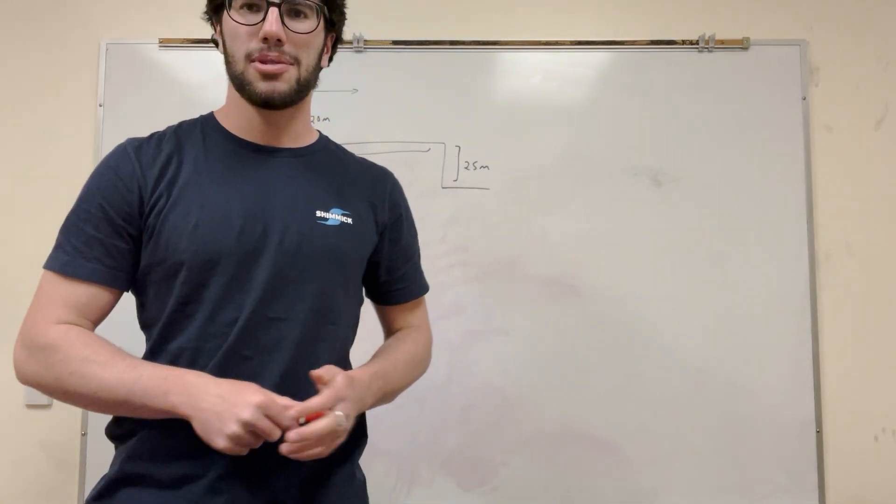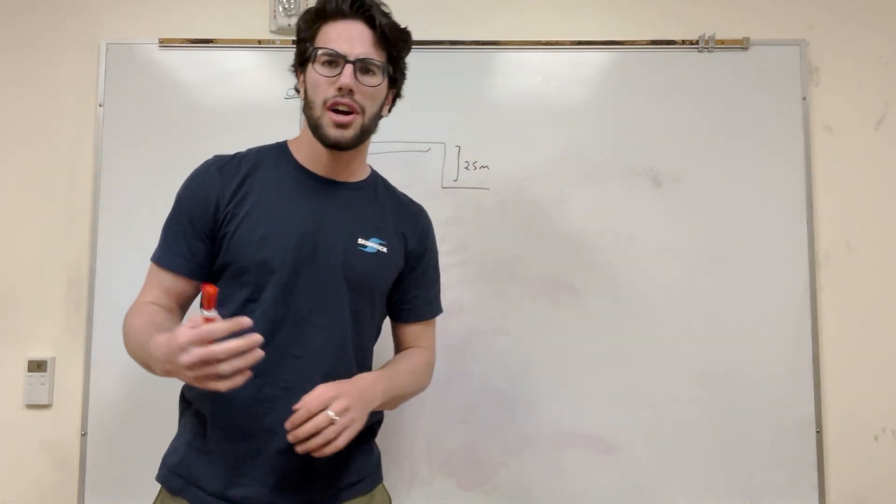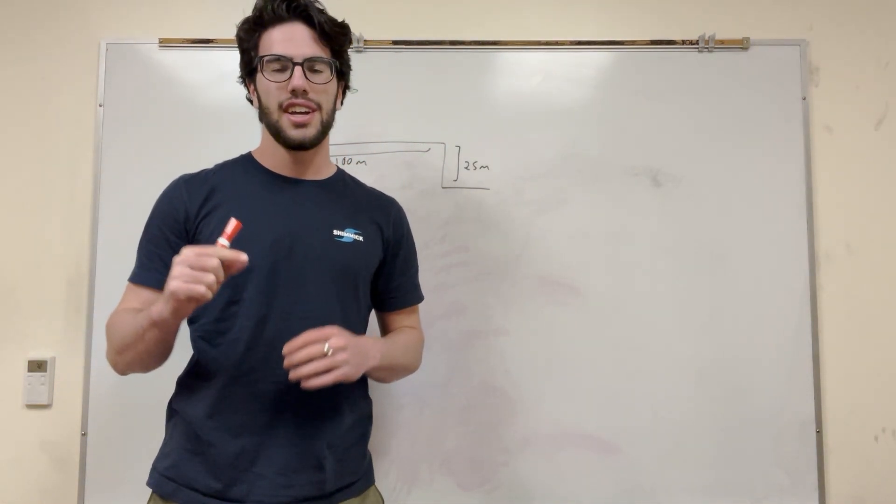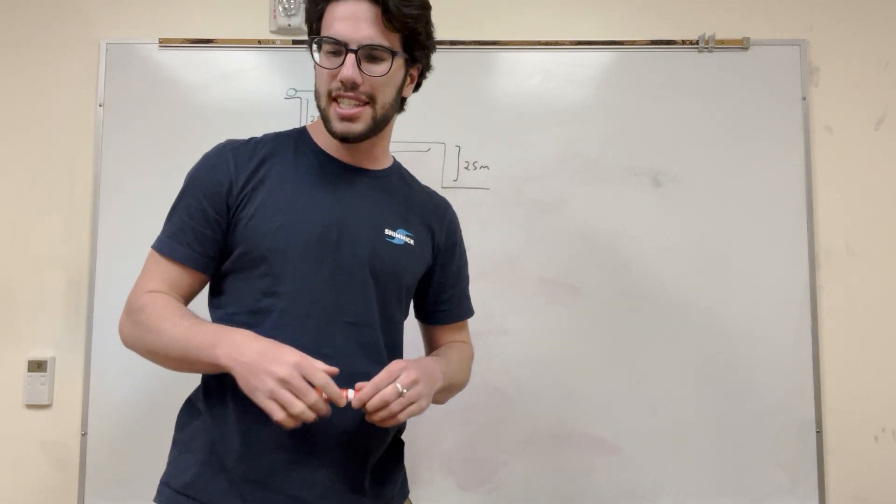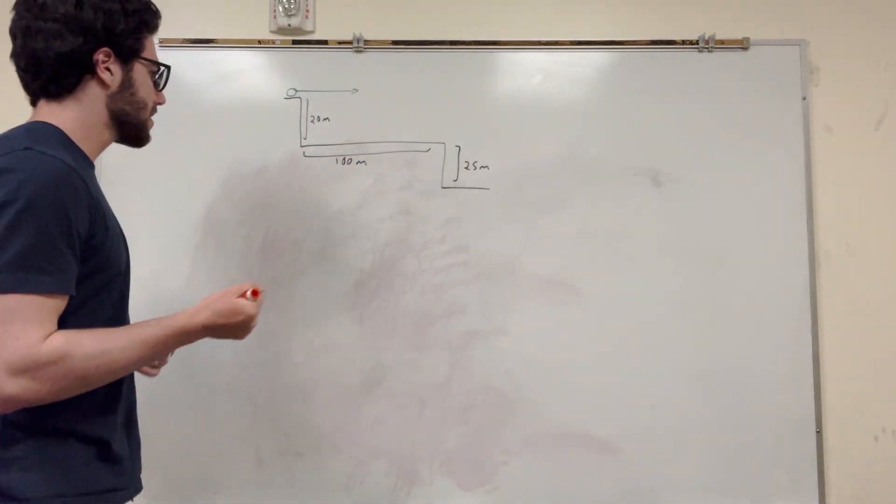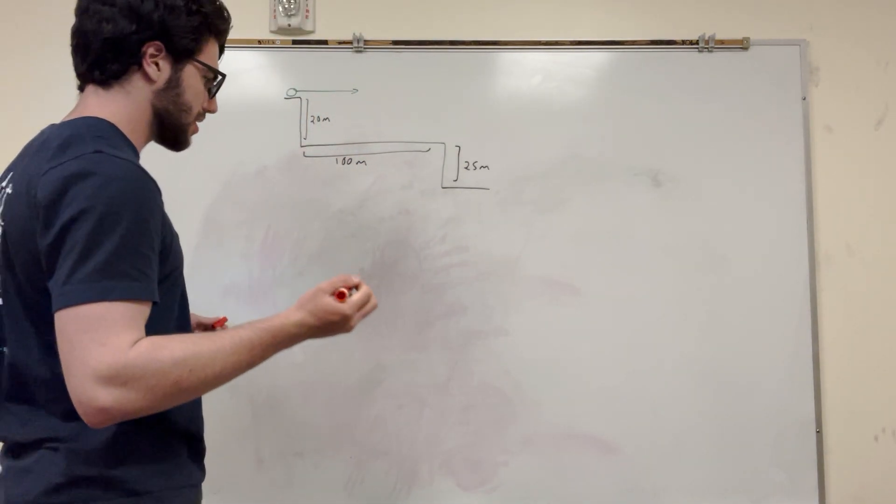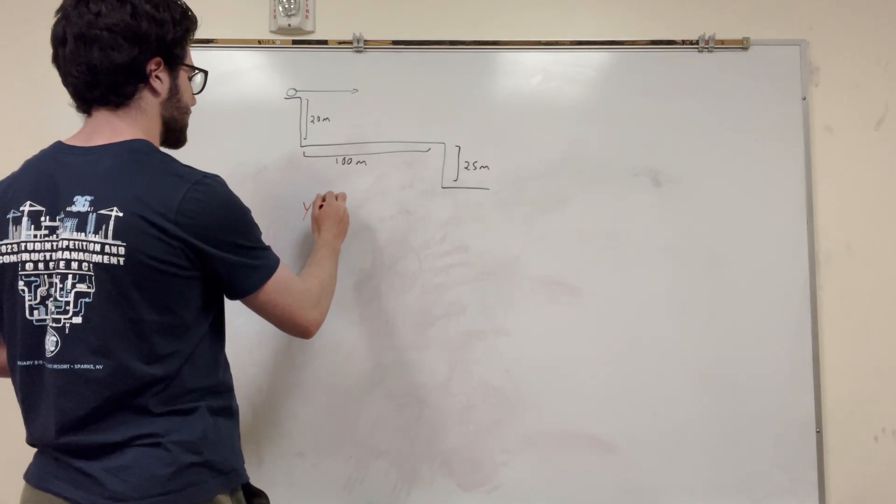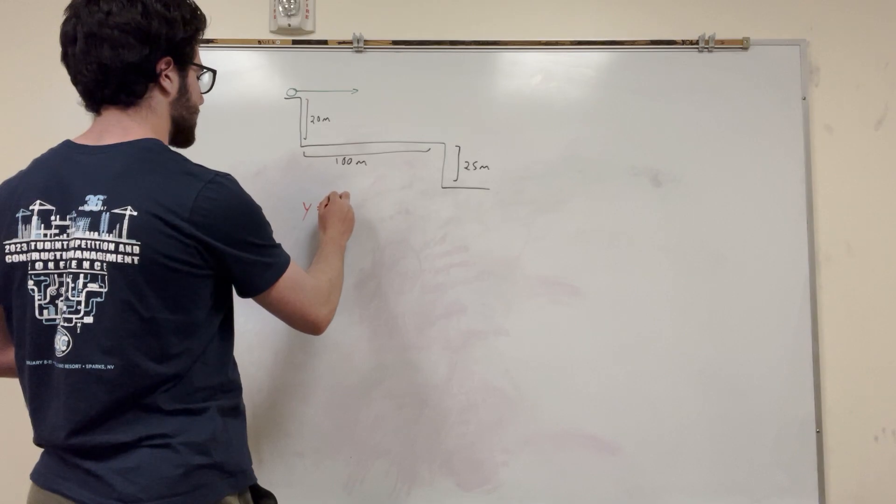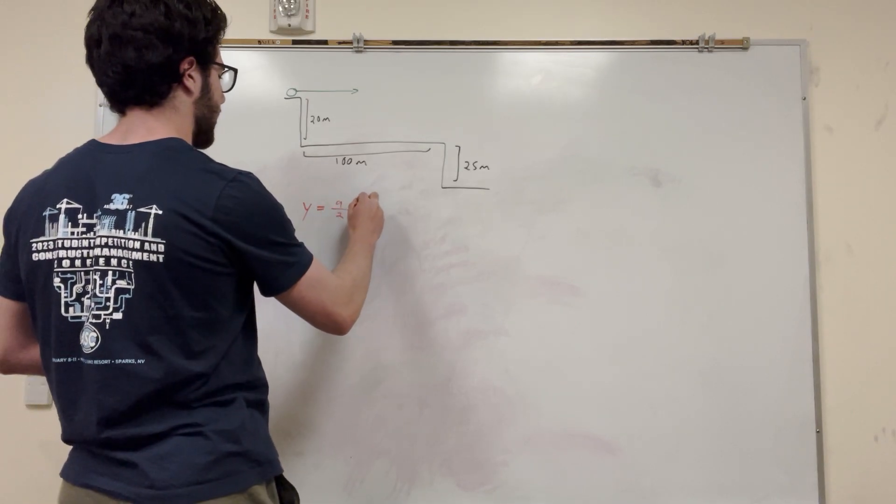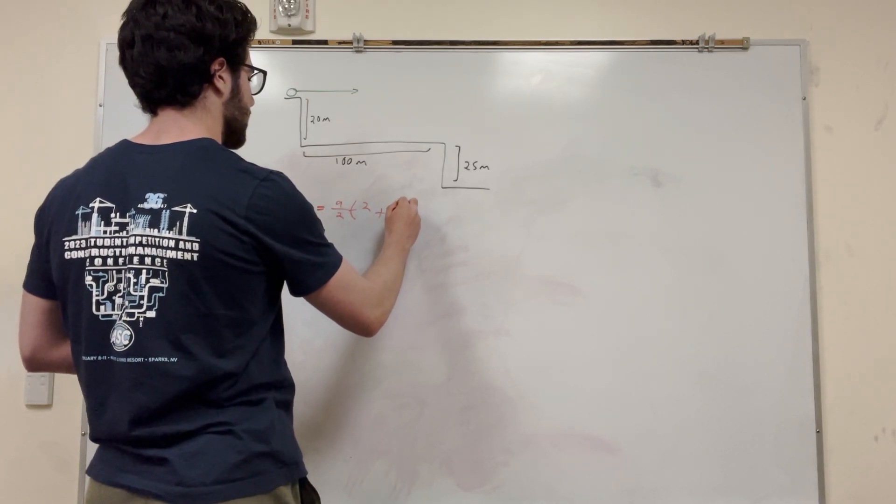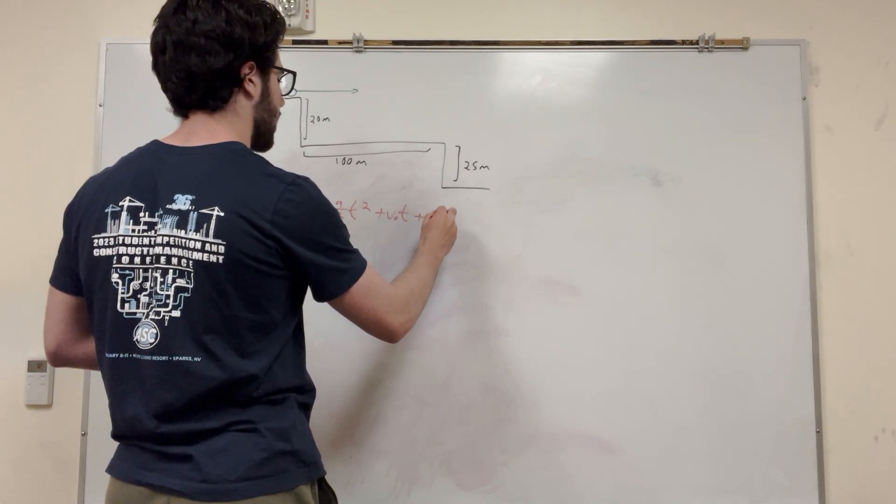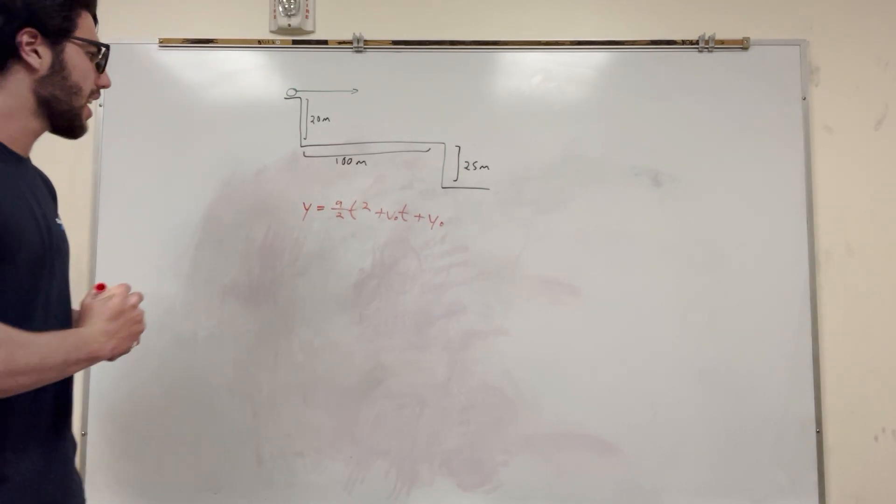So I have these kind of projectile motion problems. What I want to do is you want to find how long it's going to take the object to hit the ground. And you want to find that time, basically. That time is going to be very valuable. So if you want to find how long it's going to take the ground, of course, that's going to be something with y. So we know our y equation. y is equal to acceleration divided by 2t squared plus v naught t plus y naught.